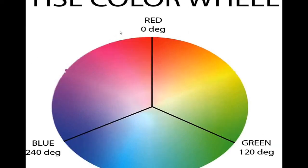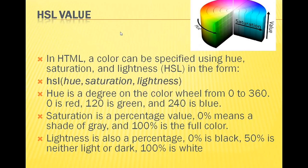The hex color wheel has 360 degrees - a full color circle of 360 degrees. At 0 degrees is red, at 120 degrees is green, and blue is at 240 degrees. Now let's look at HSL values. In HTML, colors using HSL means hue, saturation, and lightness. Hue uses the color wheel from 0 to 360 degrees - 0 is red, 120 is green, 240 is blue. Saturation is a percentage value from 0% to 100% - 0% is shaded gray, 100% is full color.